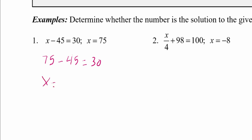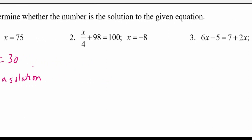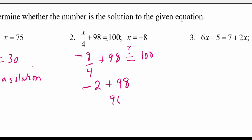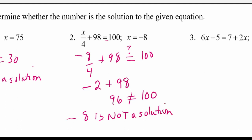So x equals 75 is a solution to that equation. In our next problem we have x over 4 plus 98 equals 100, and we want to check if x equals negative 8 is a solution. We substitute negative 8 in for x. With order of operations, we do the division first: negative 8 divided by 4 is negative 2, plus 98 gives us 96. That does not equal 100, so negative 8 is not a solution.